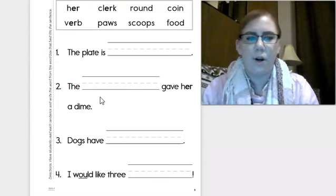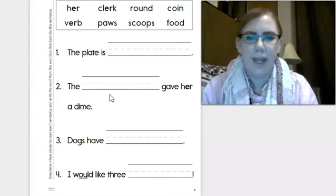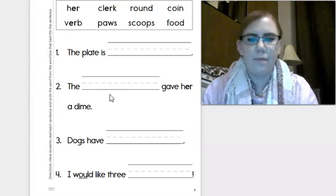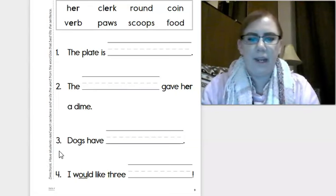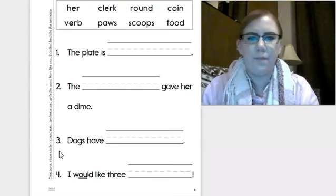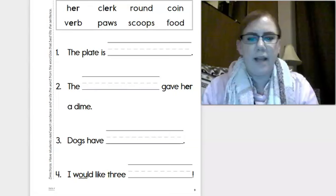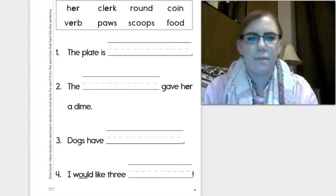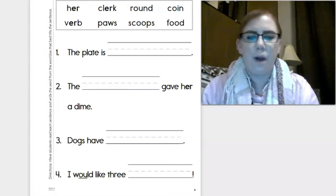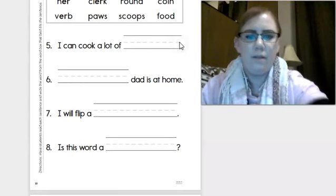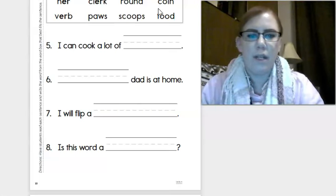Let's do number two together. The blank gave her a dime. Now that's a little tricky. The word that fits into this blank is clerk. A clerk is someone who works at a store, so a clerk might give you back some change like a dime. Find the word clerk and circle the different sound spelling that we've learned about. Circle the er in clerk and then write it in the blank. Number three: dogs have. Which word comes to your mind for dogs have? Paws. Find the word paws and circle the sound spelling aw. Then write it on the line for number three. Finish number four and the next page on your own. Use the words in the box. You'll only need to use each one once.